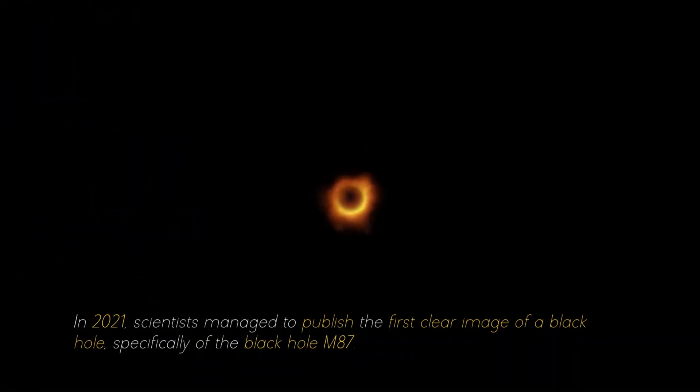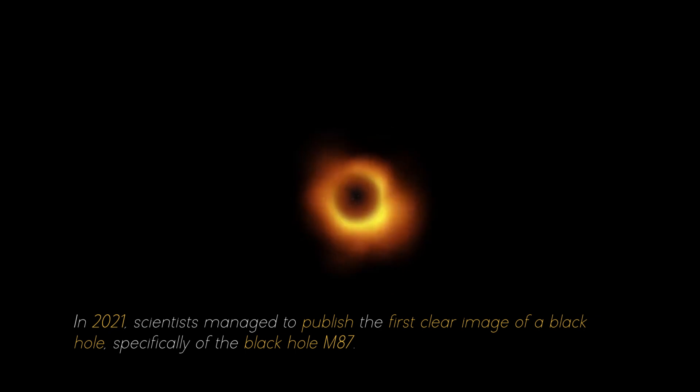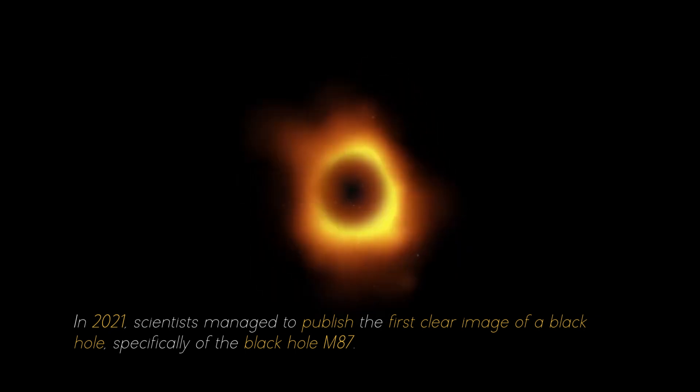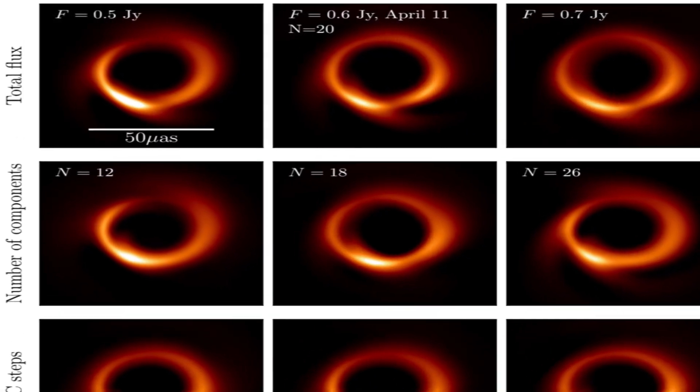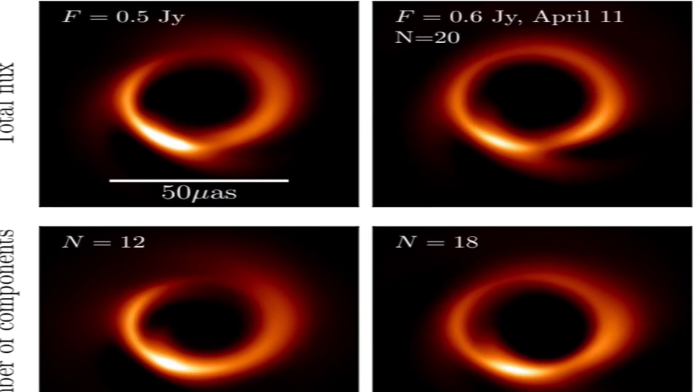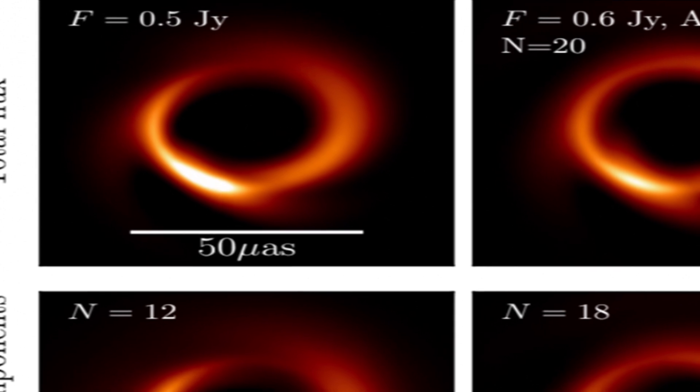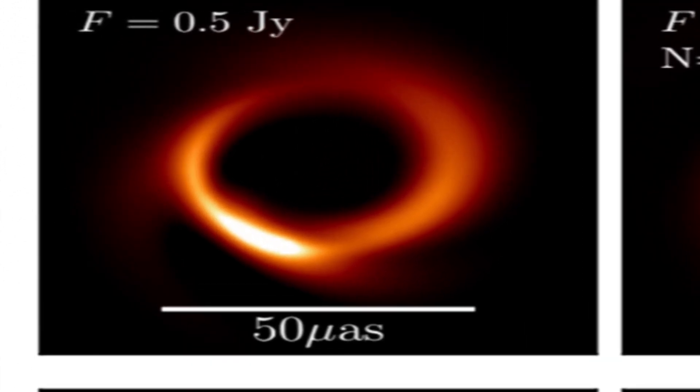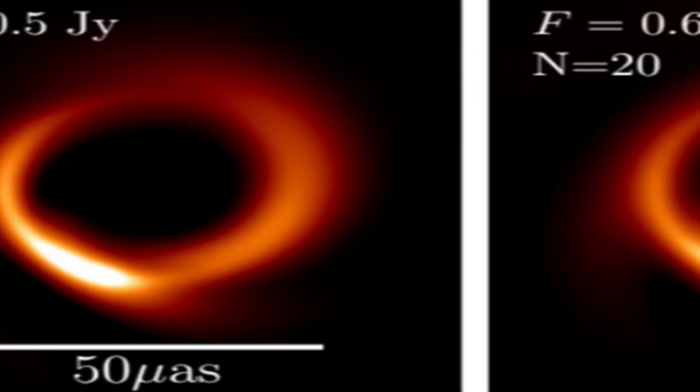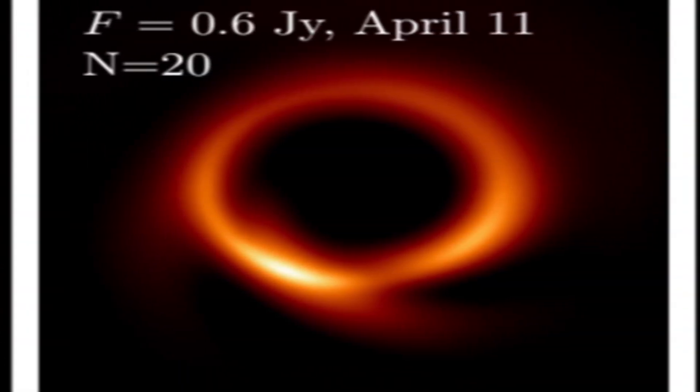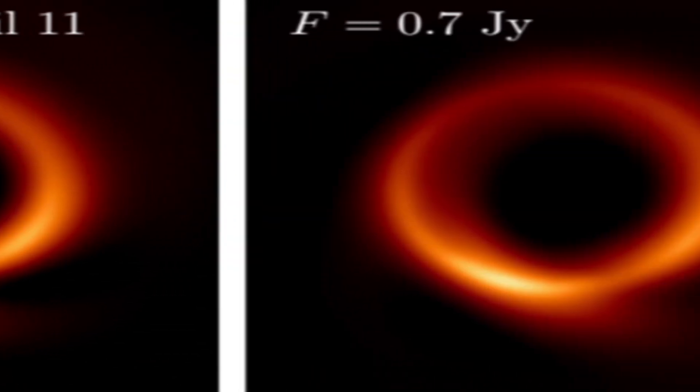In 2021, scientists managed to publish the first clear image of a black hole, specifically of the black hole M87. For several consecutive nights, photographs of the black hole were taken, and with each image researchers collected more evidence about it. It was necessary to combine the individual photographs to obtain a complete image that filled in all the gaps.